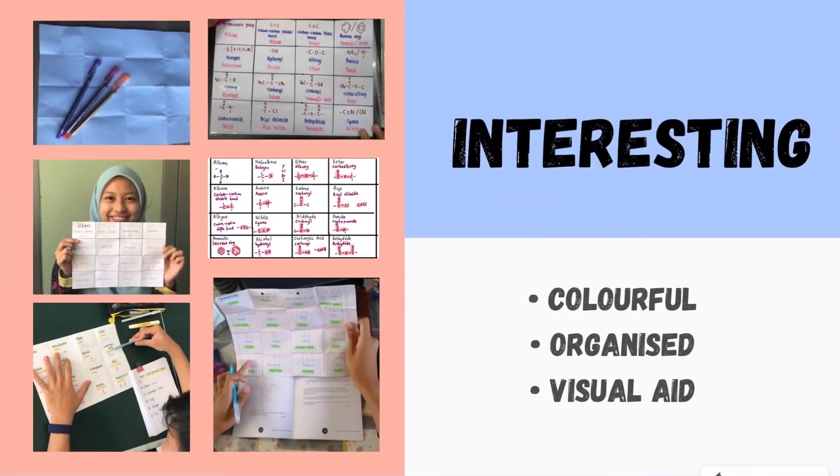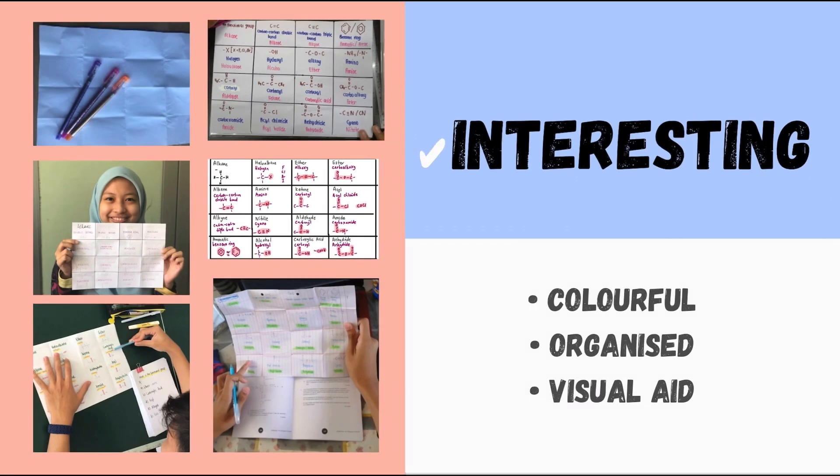Last but not least, this F3R model is interesting simply because it is colorful - you can use more than three colors if you want. It's organized in boxes and can be useful as a visual aid in learning. Many research has proven that visual aids in learning are very important, especially to memorize facts and formulas.